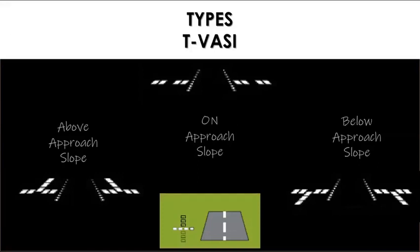The T-VASI consists of 20 lights with 10 placed either side of the runway centerline in the form of two wing bars, each of four lights, with a bisecting longitudinal line of six lights. The T-VASI system provides approach slope guidance by symbolic means as distinct from color differentiation, with colors being used only to provide a conspicuous warning signal when an approach undershoots the correct approach slope.